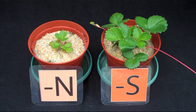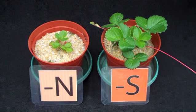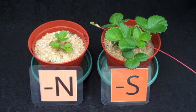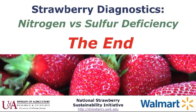So the location of where the symptoms occur and the robustness of the plant are two good characteristics that you can use to help differentiate between nitrogen and sulfur deficiency.